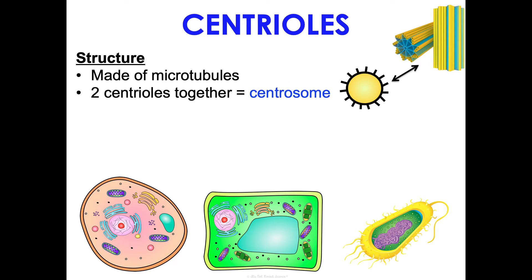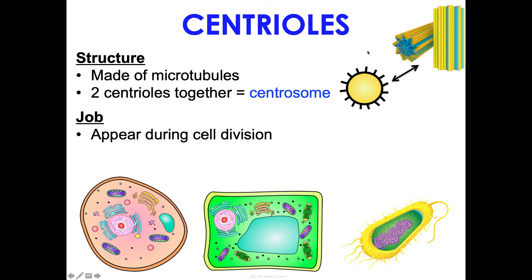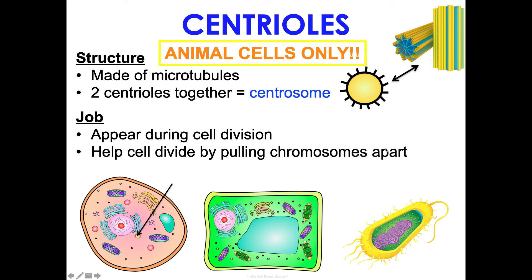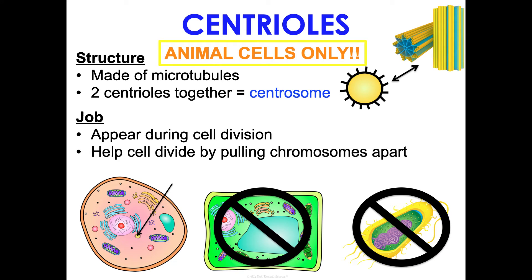Centrioles are made of microtubules, and two of them together are referred to as a centrosome — these terms are sometimes used interchangeably. They appear during cell division and help organize it by pulling chromosomes apart using spindle fibers. We'll see how they do that in concept three when we learn about mitosis. Centrioles are animal cells only — plant cells have a different microtubule-based structure that helps them during cell division.